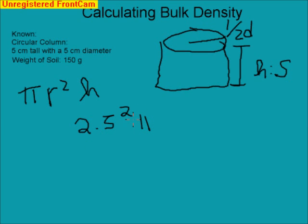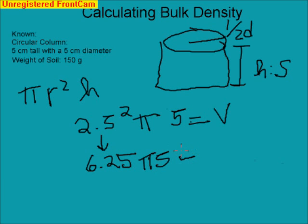Times pi, and that equals our volume. And when you actually go through and calculate that out, this value is 6.25 pi times 5 equals 6.25 pi. You end up getting a volume of 98.2, and this value is in cubic centimeters.